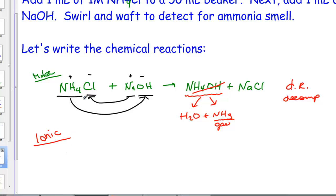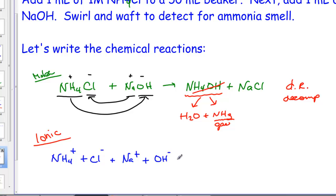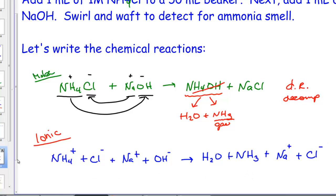The ionic equation has us dissociate all strong electrolytes. Ammonium chloride is a water-soluble salt — ammonium separates from chloride into two aqueous ions, NH4+ and Cl-. Sodium hydroxide is a strong base and dissociates into Na+ and OH-. On the product side, water is a molecule of two nonmetals bound together, and ammonia is the gas driving force. Sodium chloride is aqueous, a water-soluble strong electrolyte, so it dissociates into its ions.